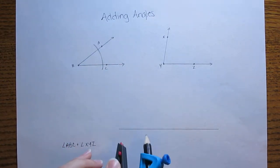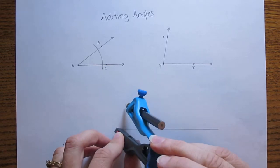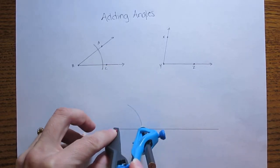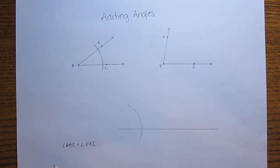Then I'm going to come down here to my segment and I'm going to put the point at the end of the line segment here and make the same arc. So I made the same arc there.